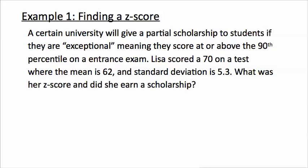Example number one: finding a z-score. I like to put these with little real-world problems. A certain university will give a partial scholarship to students if they are, quote-unquote, exceptional — meaning they score at or above the 90th percentile on an entrance exam. Lisa scored a 70 on a test where the mean is 62 and the standard deviation is 5.3. What is her z-score, and did she earn a scholarship?